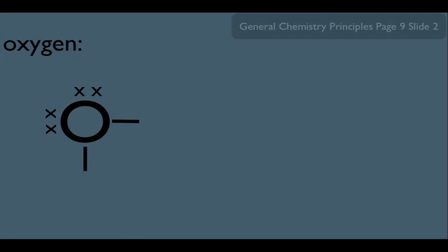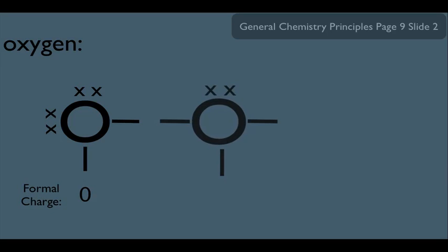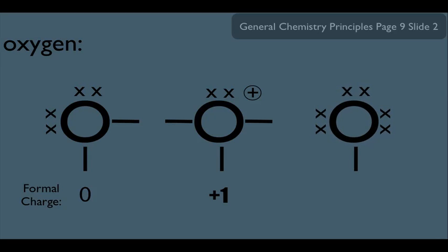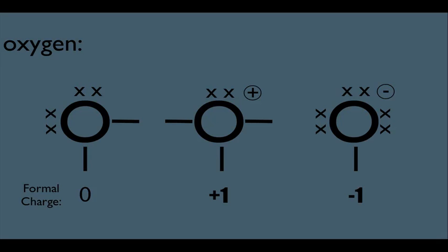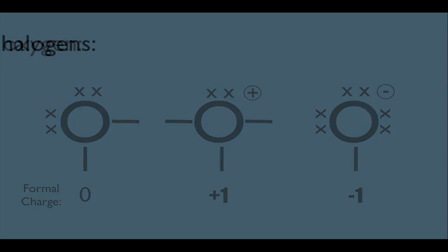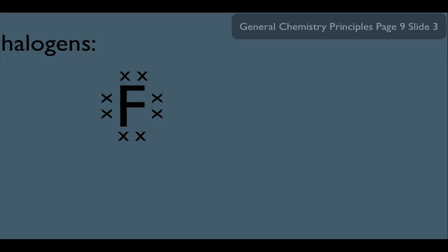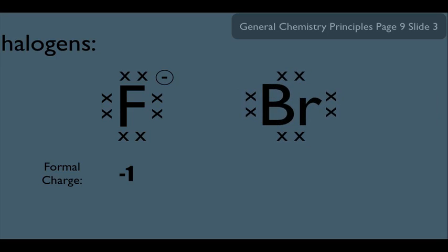Let's look at oxygen. Any time you see oxygen with two bonds and two lone pairs, it's always going to have a zero formal charge. Any time we see oxygen with three bonds and one lone pair, it's always going to be plus one. And any time we see an oxygen with three lone pairs and one bond, it's always going to have a negative one formal charge. For halogens with four lone pairs of electrons, they're always going to be negative one — this is what fluorine and bromine would look like.